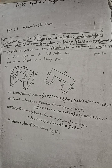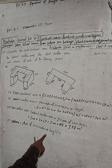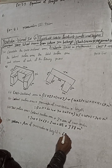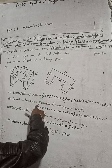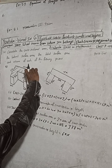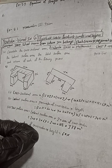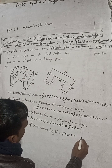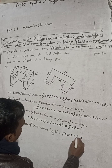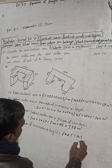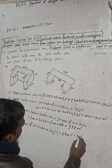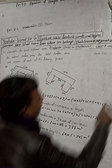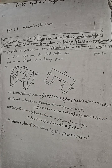Now for the volume. Volume equals area of cross-section into height. The cross-sectional area is already calculated as 69 and the height — the thickness — is 5 meters. So volume equals 69 into 5, which equals 345 cubic meters.